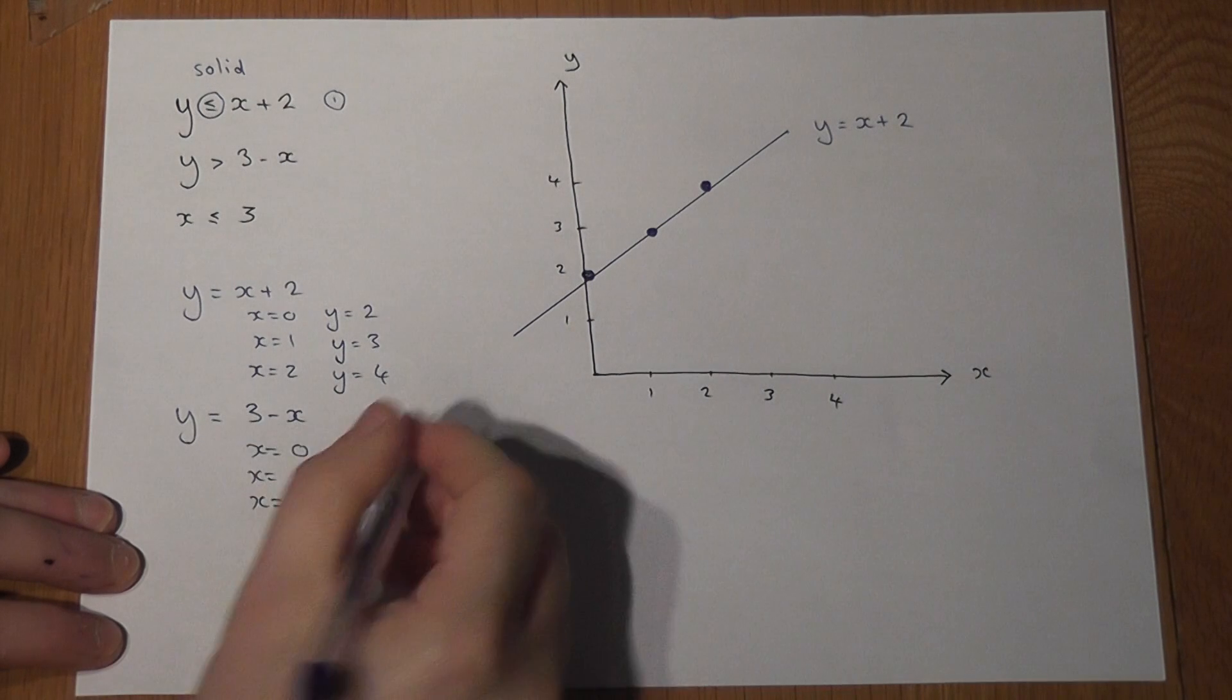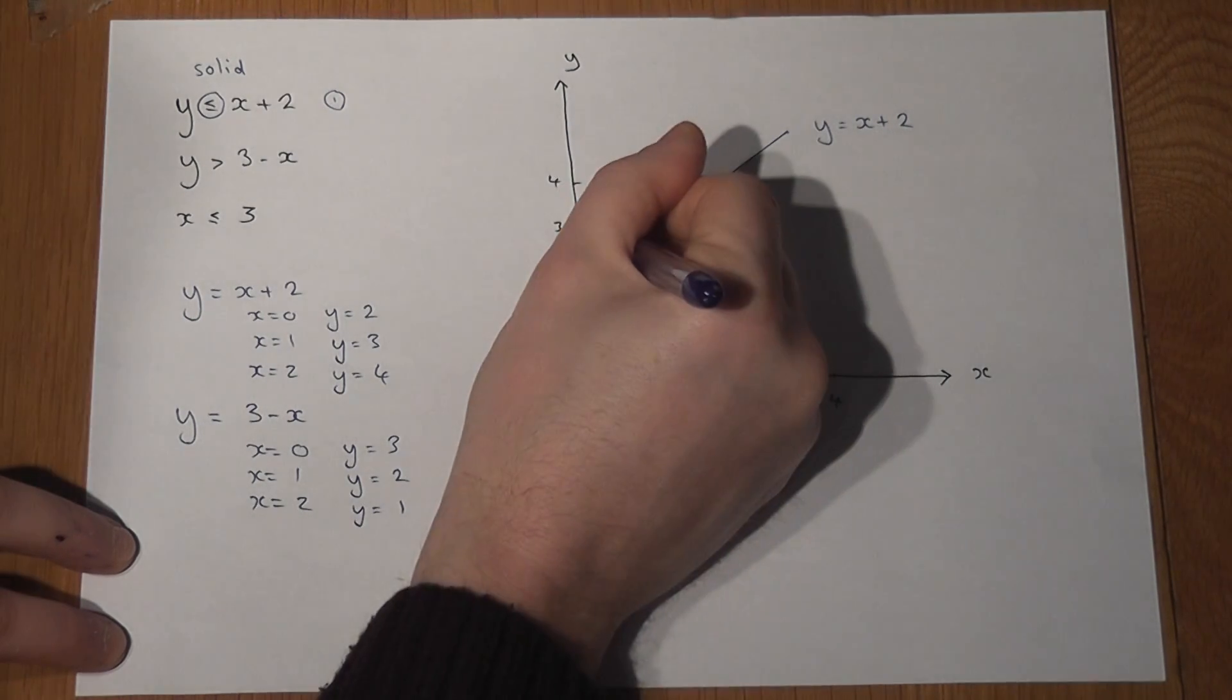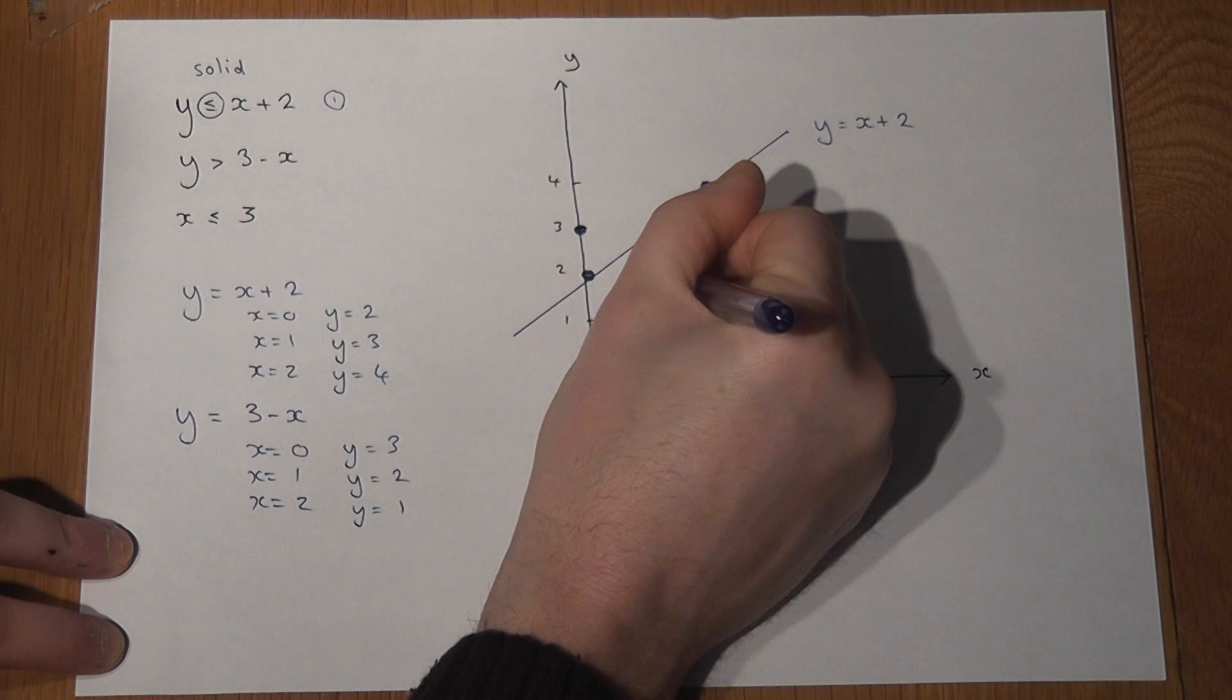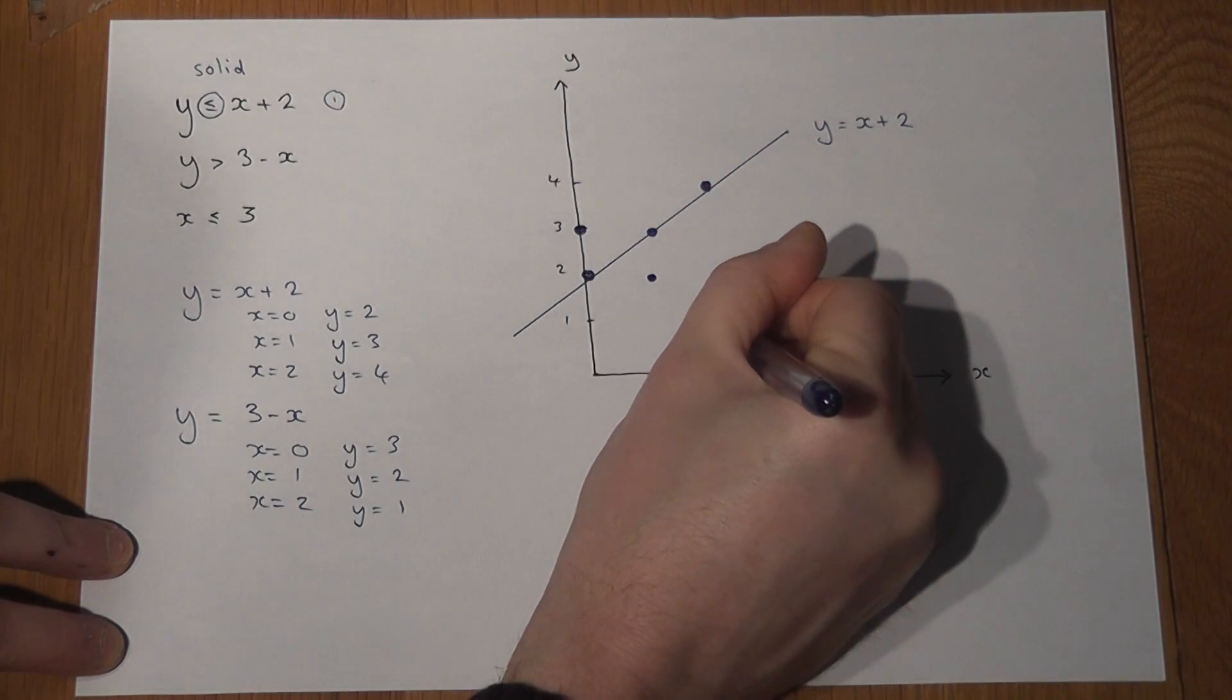So I can plot these coordinates. If x is 0, y is 3. If x is 1, y equals 2. And if x is 2, y equals 1.